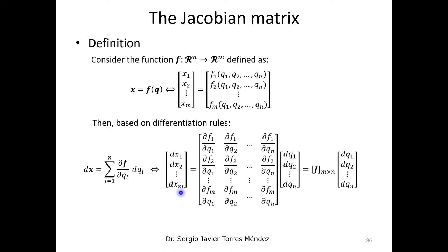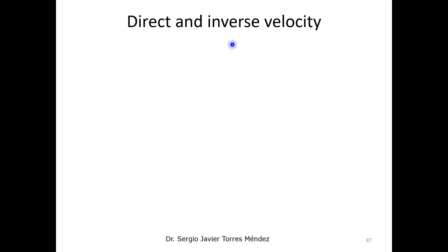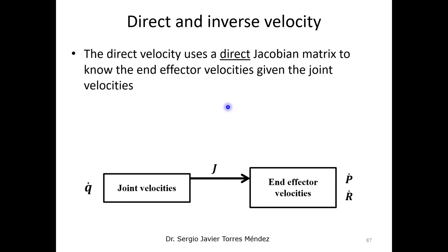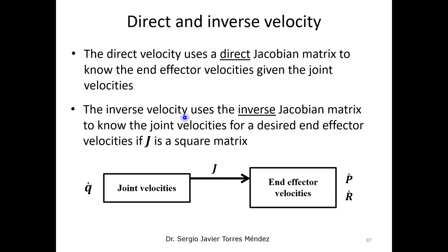Similar to the forward and inverse position analysis, we have a direct and inverse velocity analysis. In direct velocity analysis, you receive the joint velocities as input and use the direct Jacobian matrix to find the end-effector velocities. In the inverse velocity analysis, you receive the end-effector velocities as input and use the inverse Jacobian matrix to find the joint velocities, if and only if the Jacobian matrix is a square matrix.